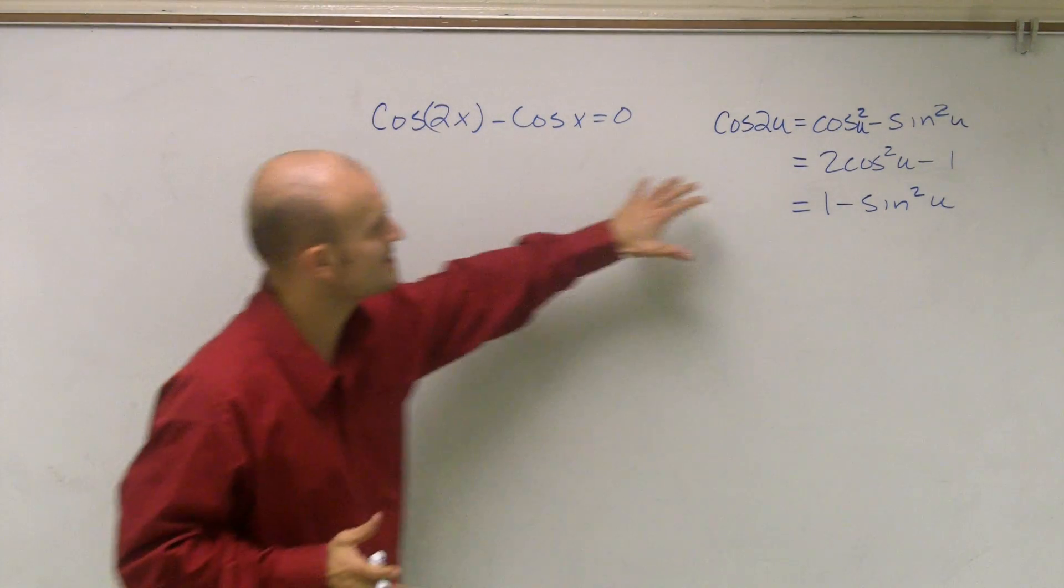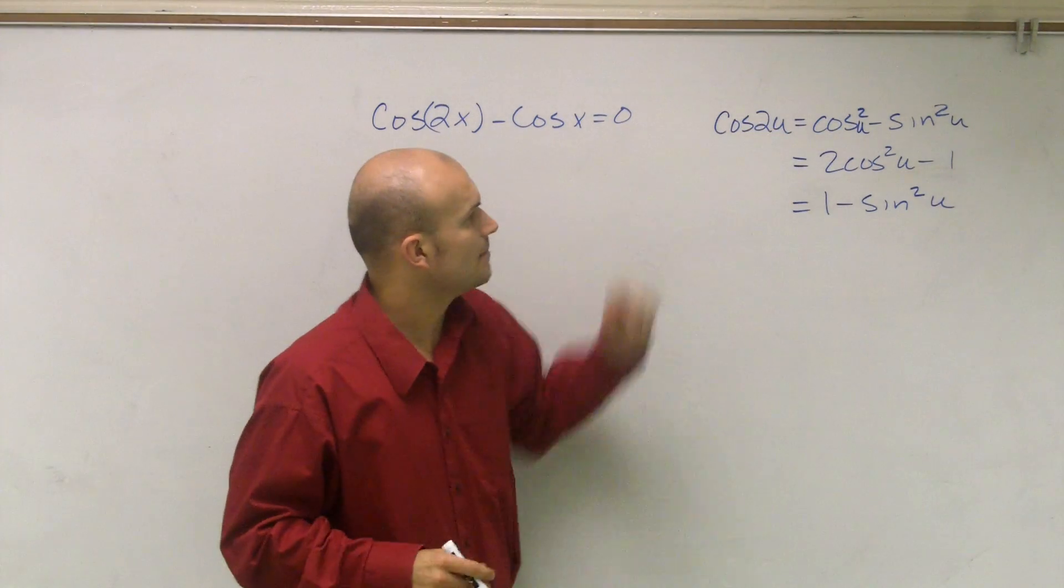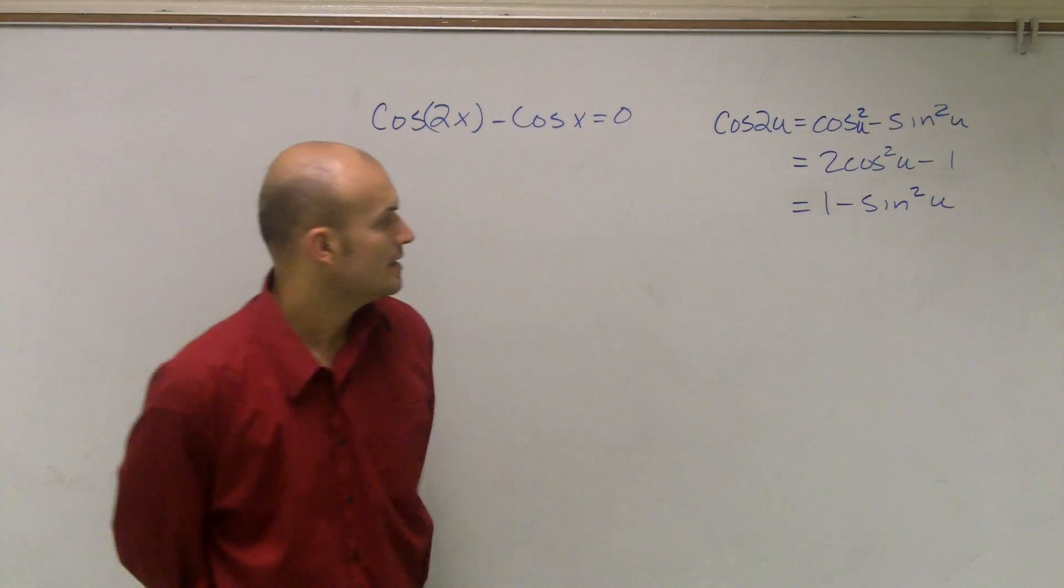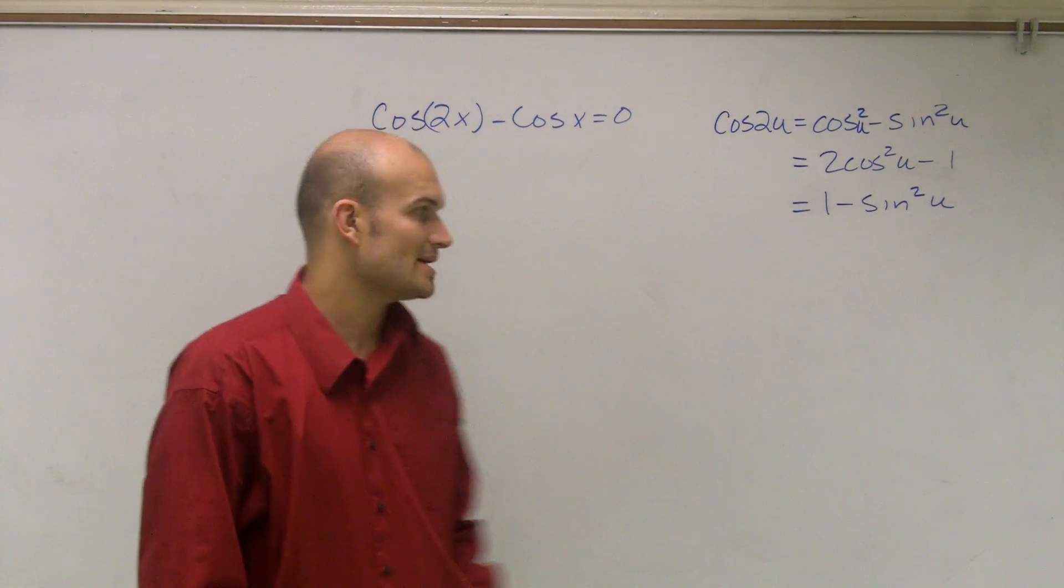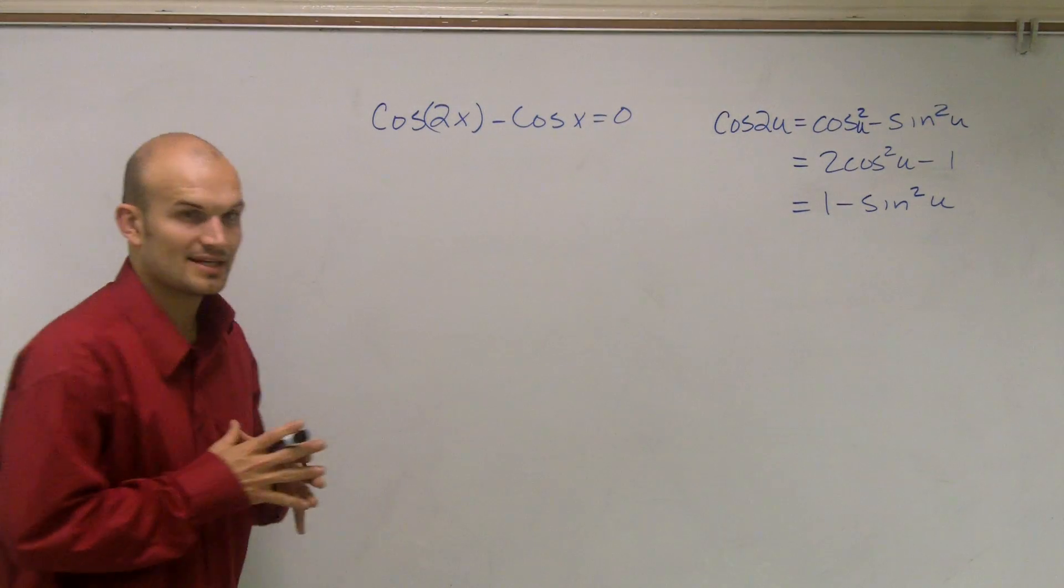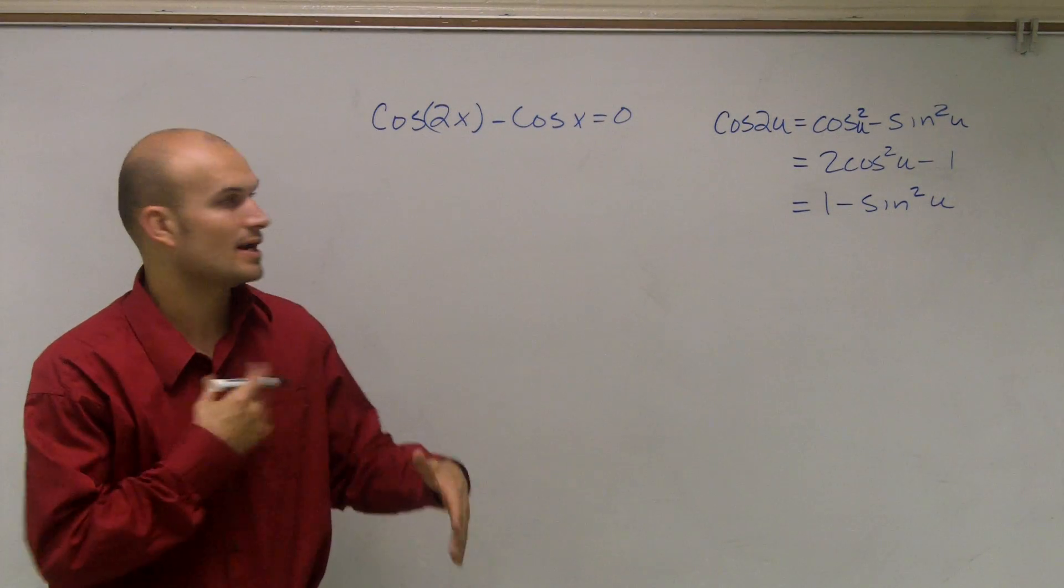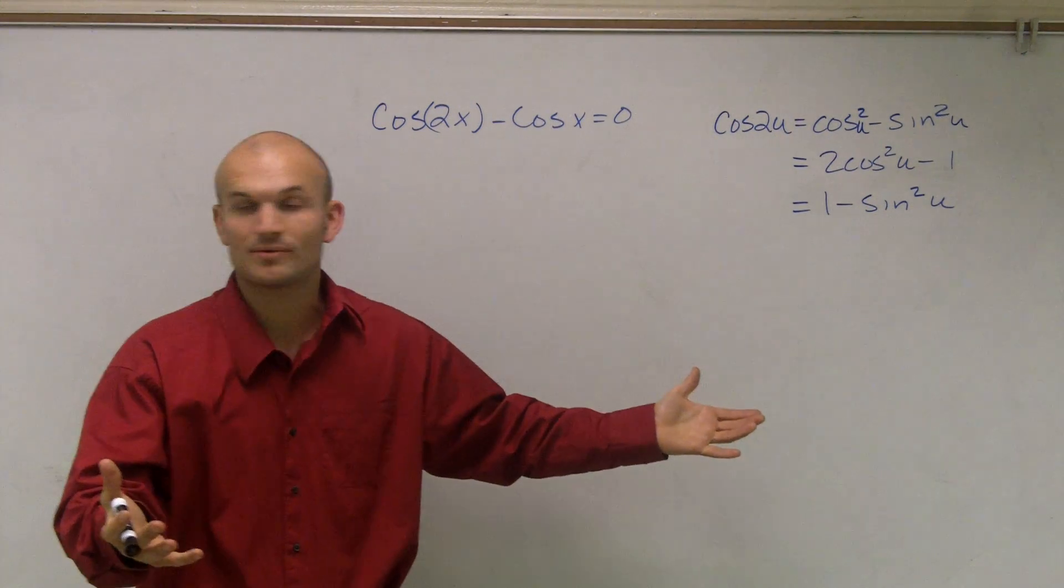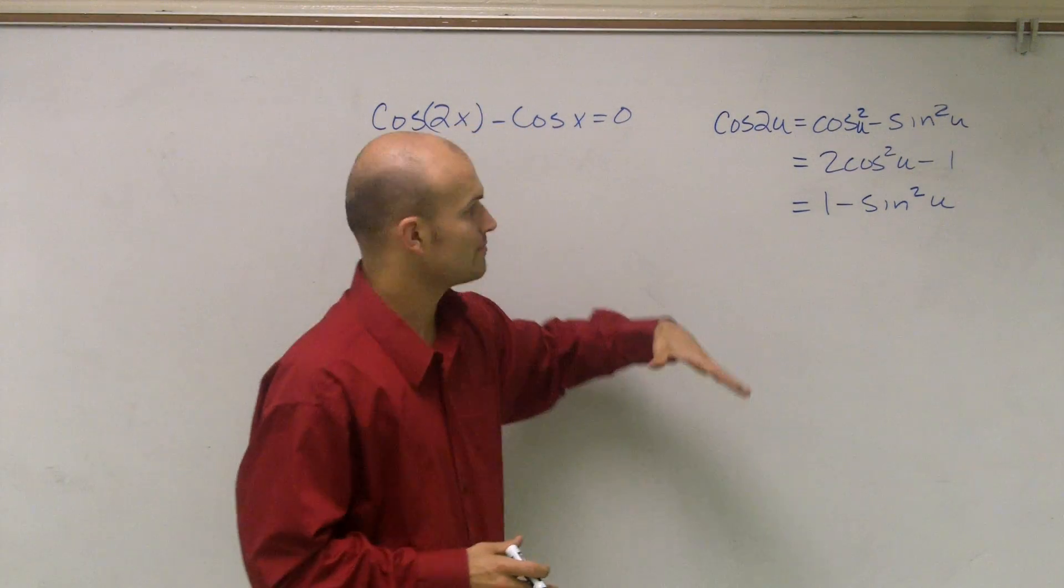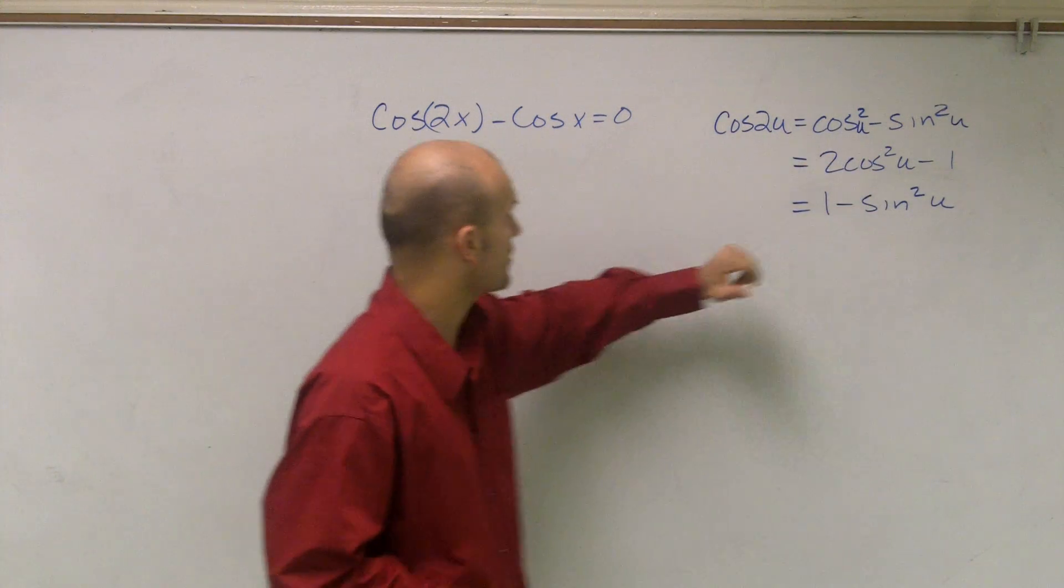So I notice I have cosine of 2x, so what I did was I previously wrote up my double angle formulas for cosine. And you can really use either one, any one that really suits you the best. And so I'm going to determine which one is going to work. Now obviously, if you have the double angle of sine, there's only one formula that we've been provided, so that's what you're going to have to use. But for cosine, we can pick and choose which one we want to solve for.